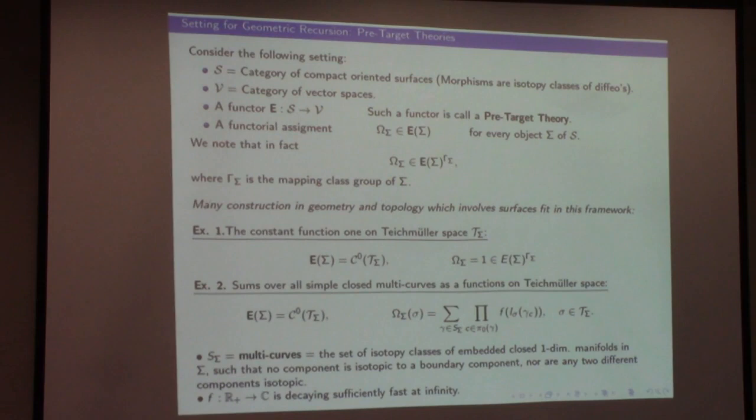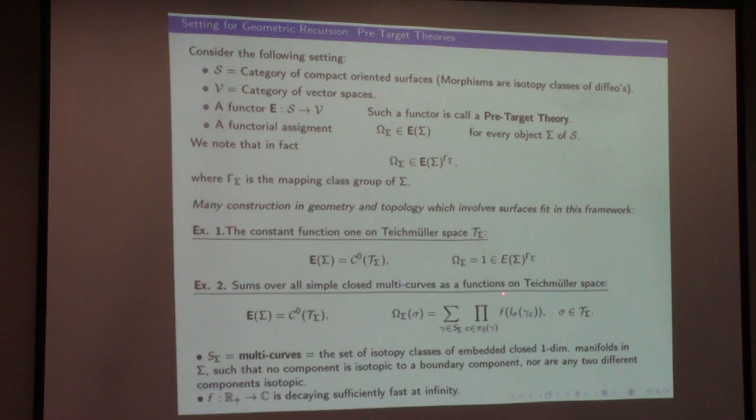I take the very simple function: the function one inside this space of continuous functions. That's clearly mapping class group invariant. You may think this example is utterly useless and uninteresting, but the moment we actually build this function one using geometric recursion, you will see it works as a kind of partition of unity. The Mirzakhani-McShane identity lies behind getting this from geometric recursion.